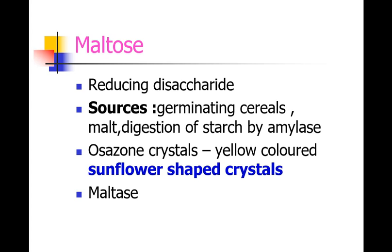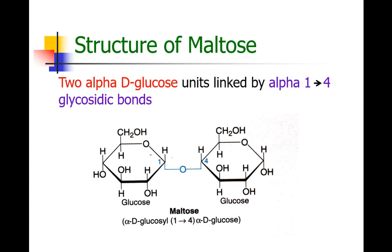Maltase is the enzyme which converts maltose into free glucose molecules. Looking at the structure of maltose, it is made up of 2 glucose units. Both glucose molecules in maltose are linked by a glycosidic bond. The first carbon of one glucose and the fourth carbon of another glucose molecule are involved in the glycosidic bond formation, so this is called an alpha-1,4 glycosidic bond.